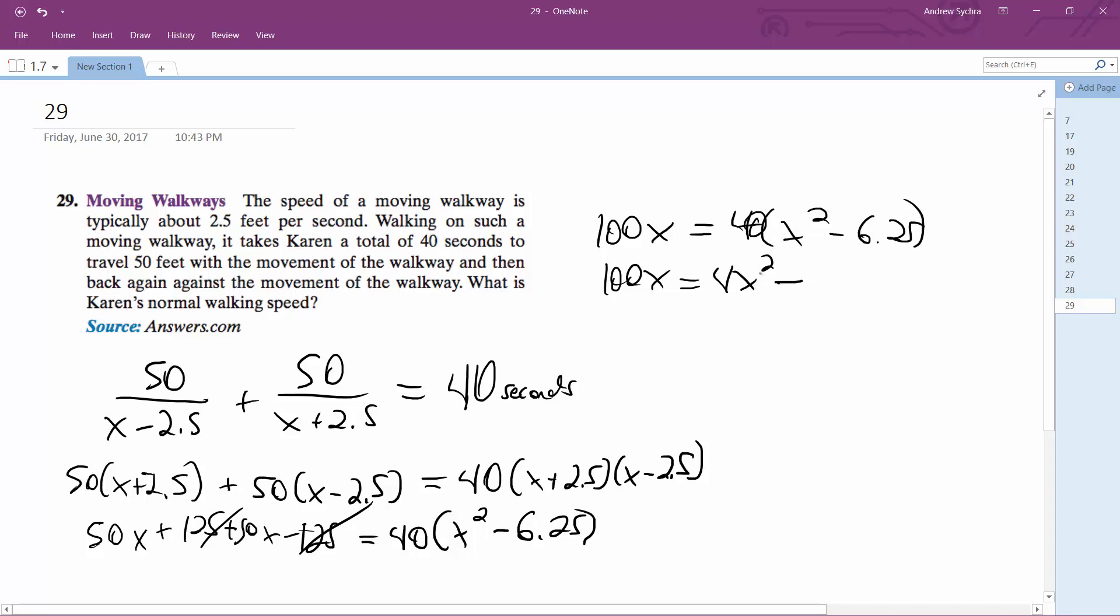This should be 40 times x squared minus 250. Finally we get 100x equals 40x squared minus 250. Divide by 10, 4x squared minus 10x minus 25 equals 0.